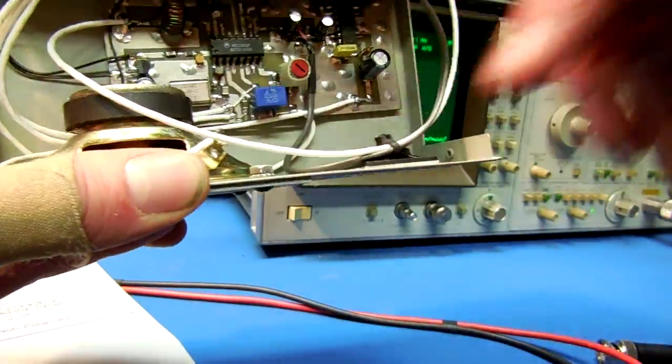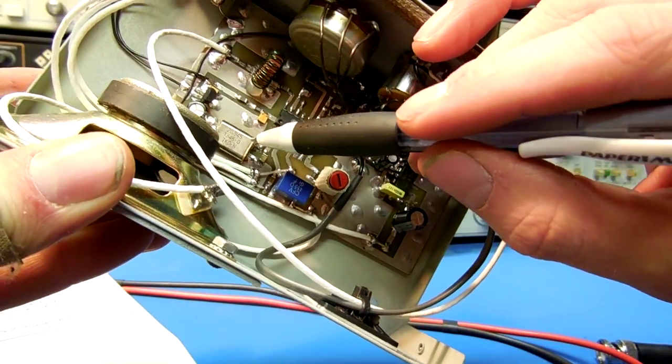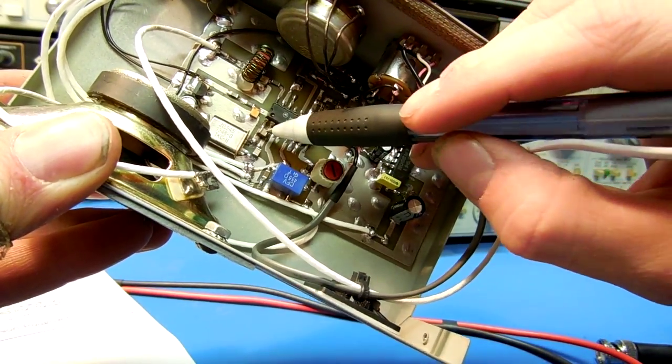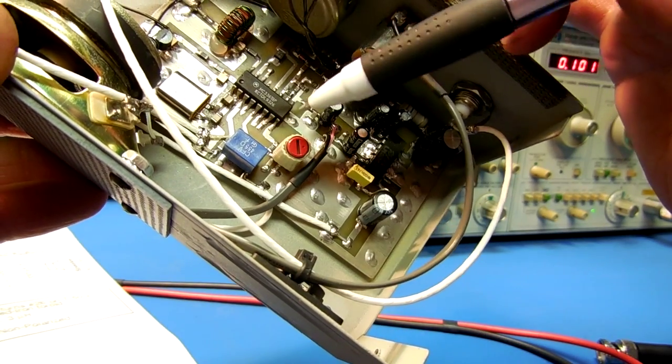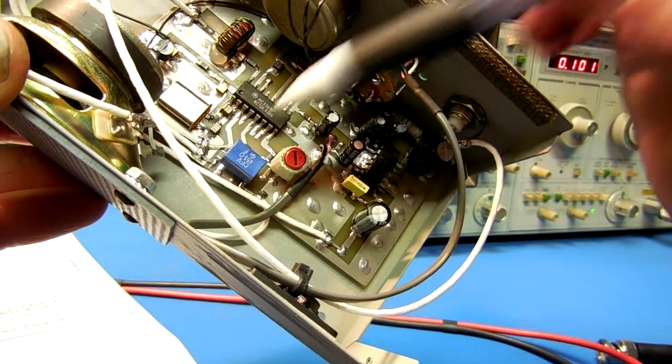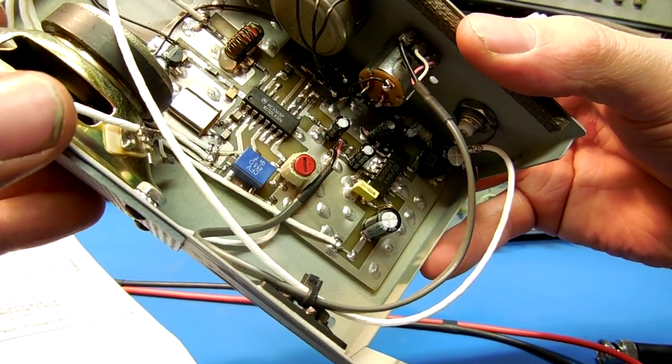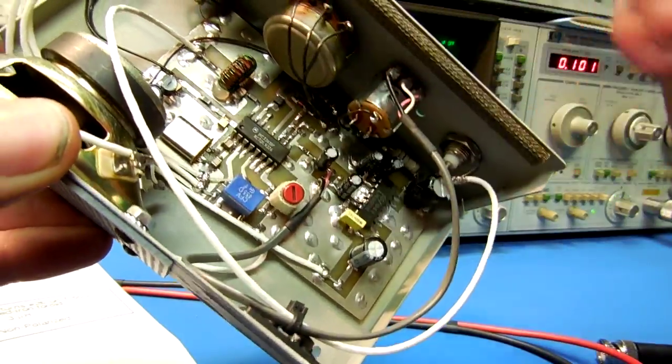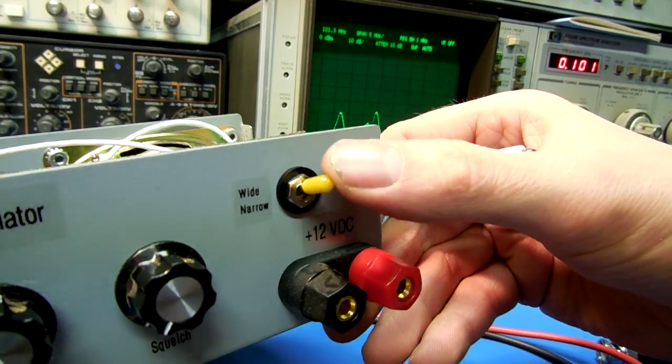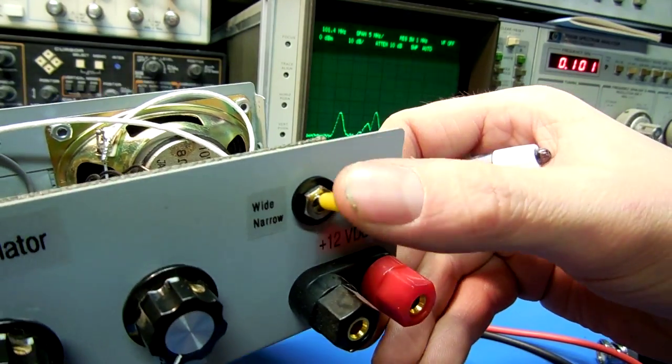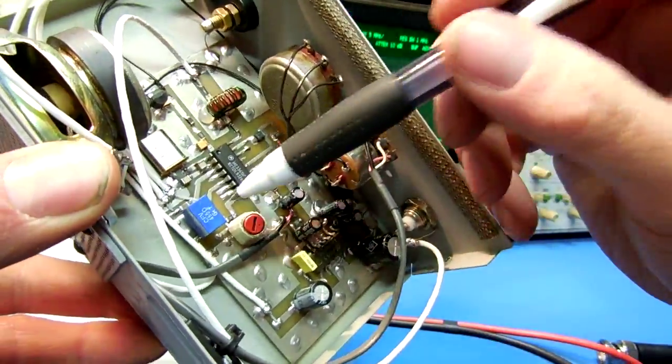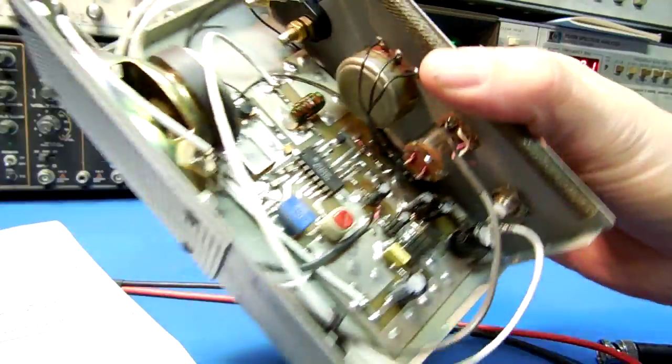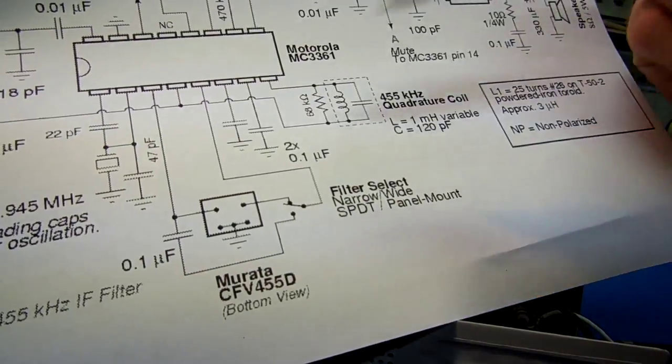Here you can see the 20.945 megahertz crystal right here and the loading capacitors. This blue rectangle is the CFV455D Murata IF filter. The D version has about a plus minus 10 kilohertz 6dB bandwidth. I also have on my demodulator as an option for a wide and narrow FM or IF select. When you select the wide, I have a 0.1 microfarad capacitor that just bypasses the IF filter right here.